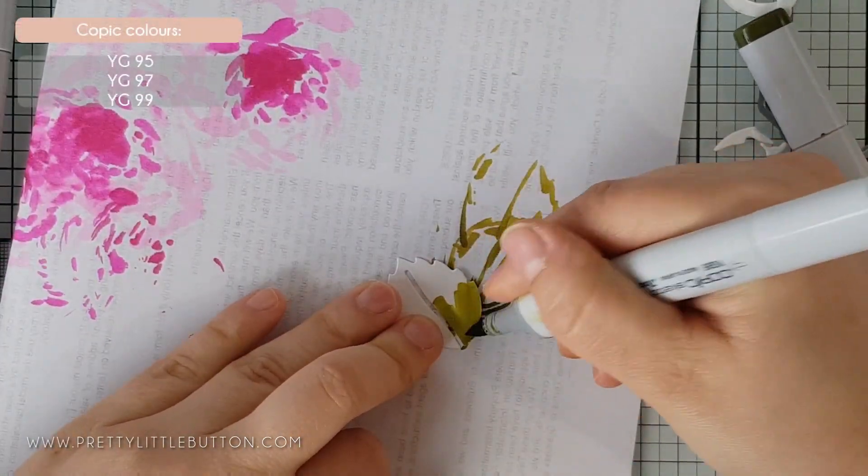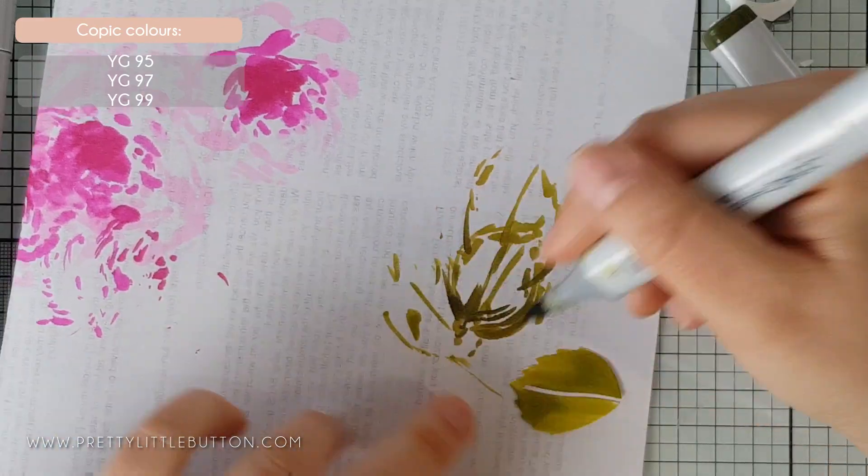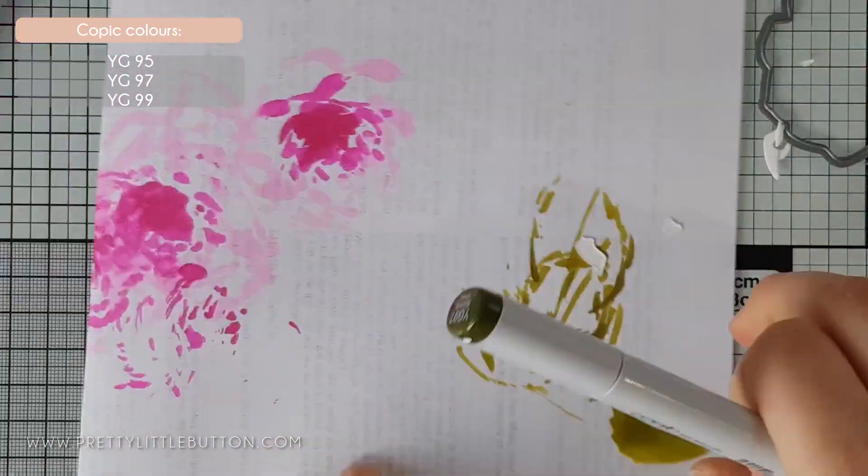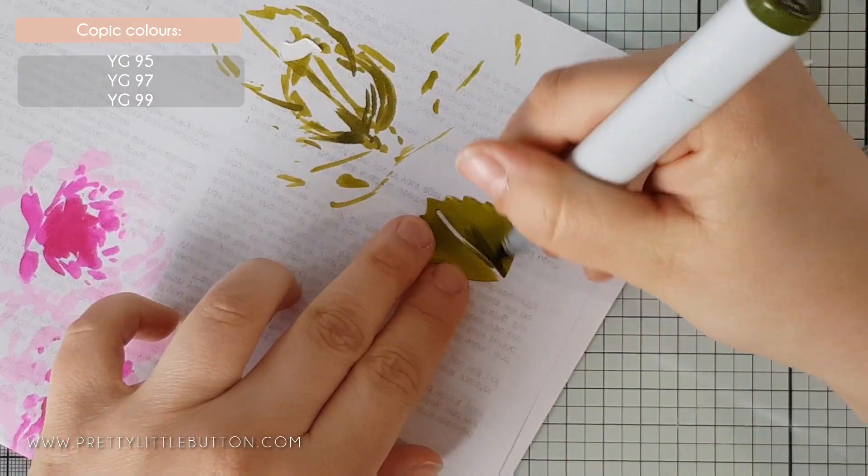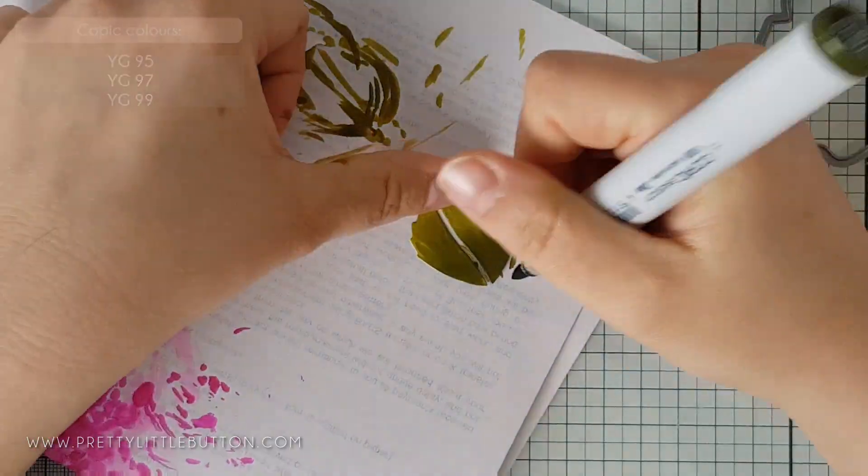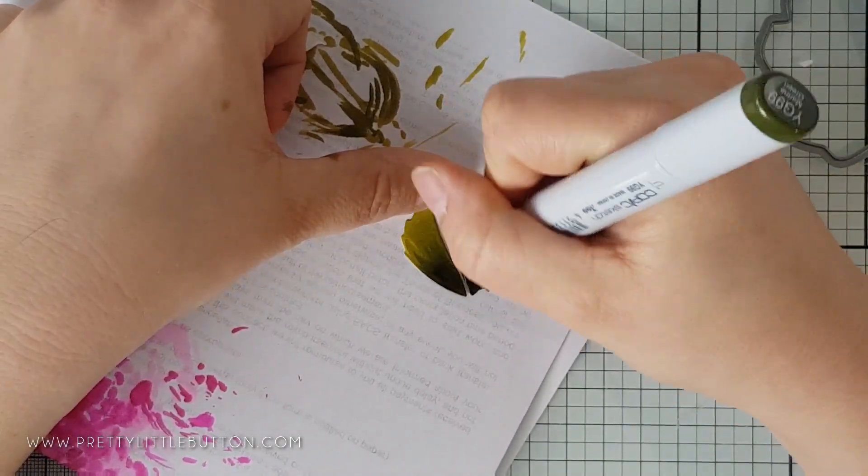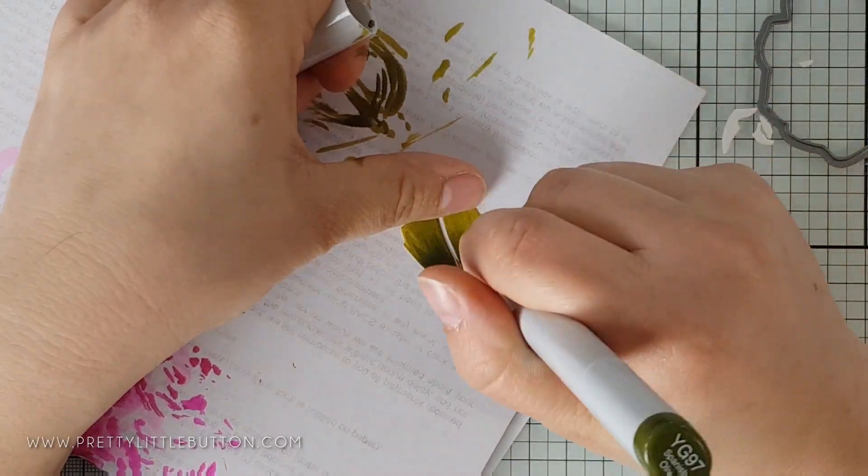For the leaves, I used the same process as the florals and I used YG95, YG97, and YG99. These greens are more of a muted green which really works well with the bold bright pink of the florals and also ties in with the muted gray color scheme of the background.